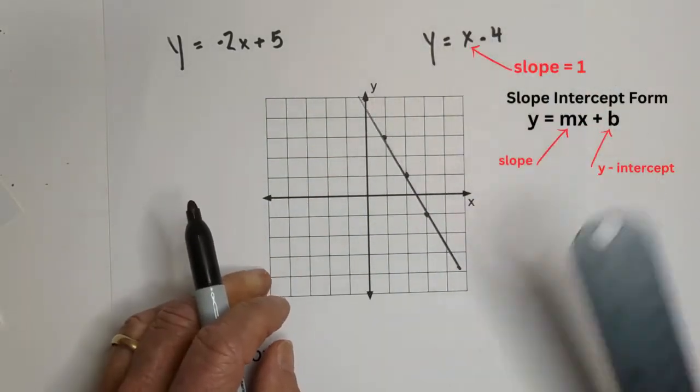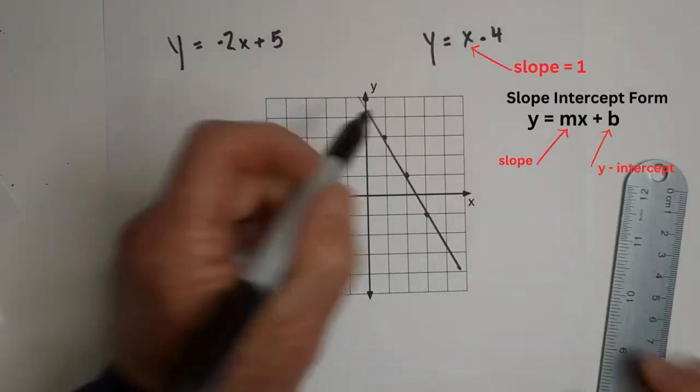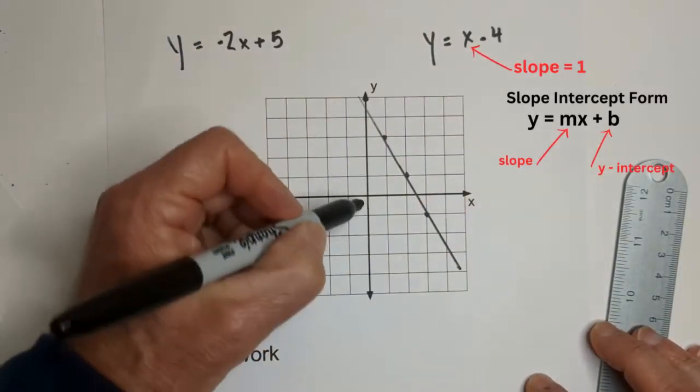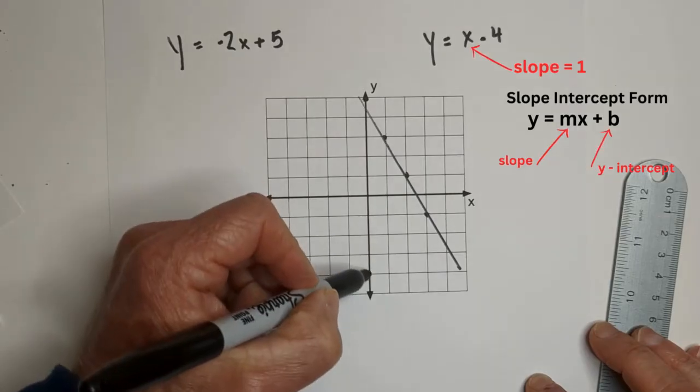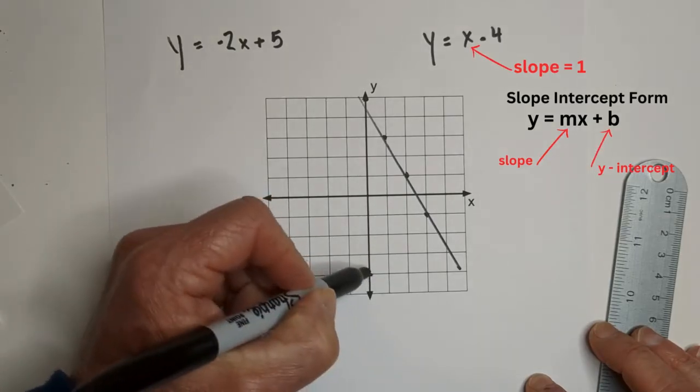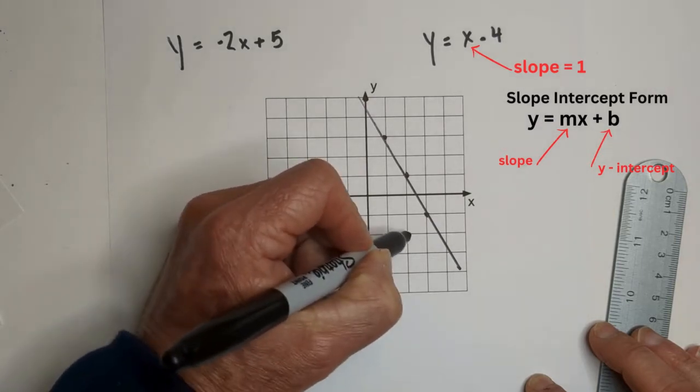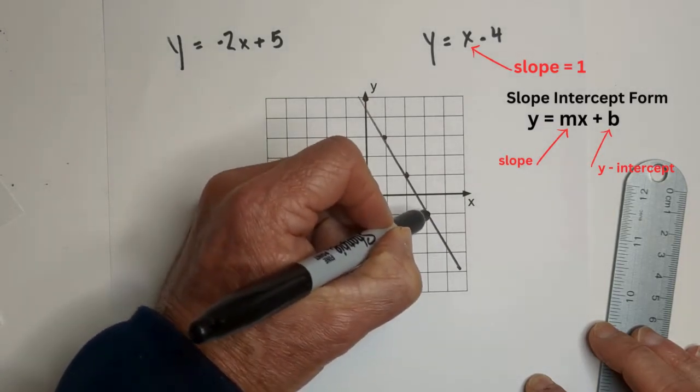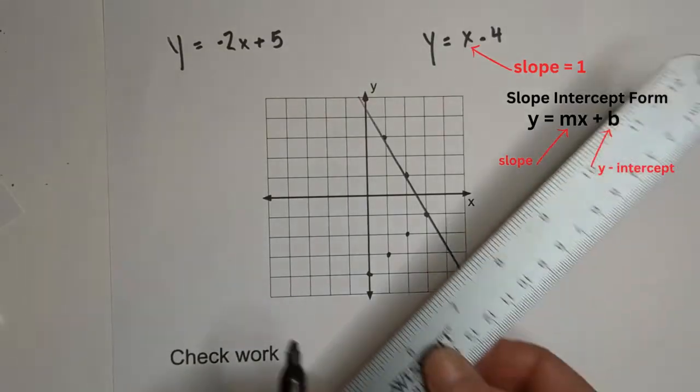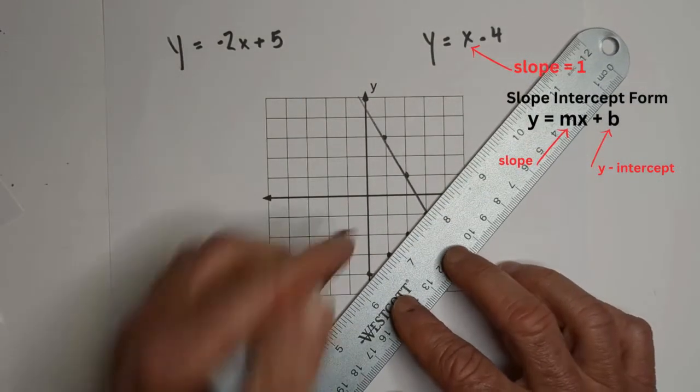So now let's look at the next one. The y-intercept is negative 4. 1, 2, 3, 4. And the slope is 1 over 1. Up 1 over 1. Up 1 over 1. Up 1 over 1. And if I continue that, they will intercept right here.